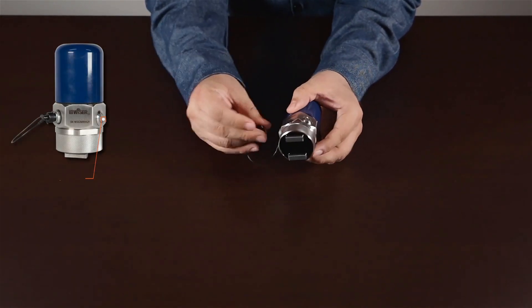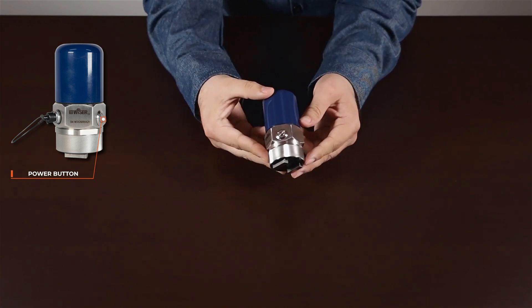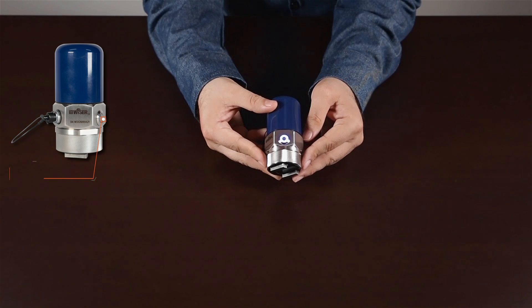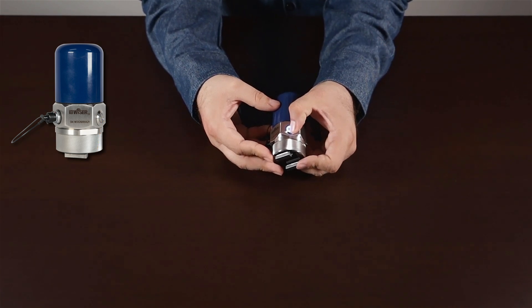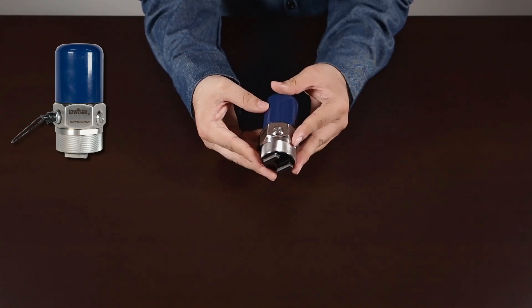Lastly, we have the power button. Turning on the Wiser is very simple. Just press the button once, and it will light up blue to indicate it's on and can connect to any device. To turn it off, simply press the button for three seconds until the light goes off, indicating the Wiser is off.